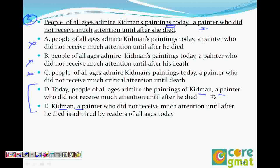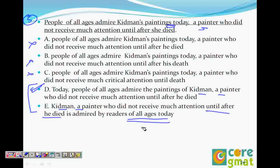Today, people of all ages admire the paintings of Kidman, a painter who did not receive much attention until after she died. Kidman, a painter who did not receive much attention until after he died, is admired by readers of all ages today. So I feel D is right because in E there is a modifier error — it says 'all ages today,' so 'today' modifies 'all ages,' which is wrong. If you are not able to locate the error, compare the choices vertically, word by word. Generally students feel both choices are the same and don't recognize the error. So you have to vertically compare the choices.